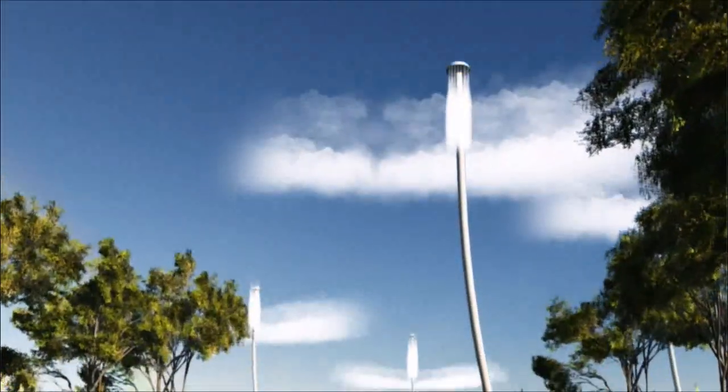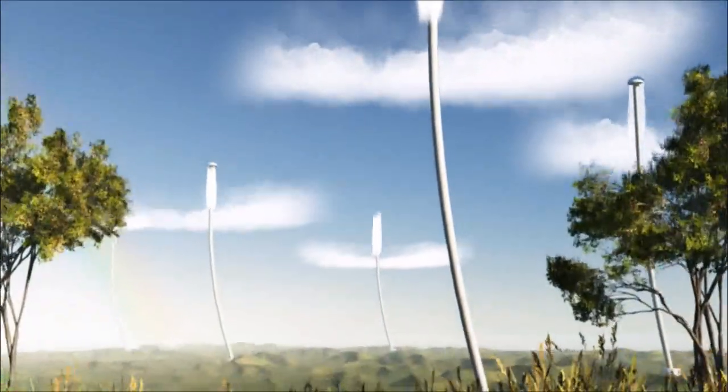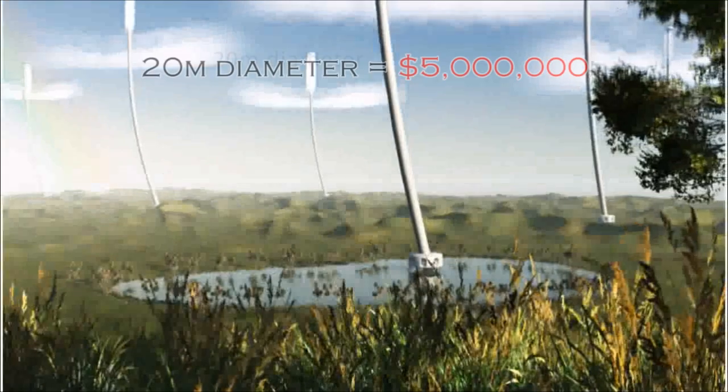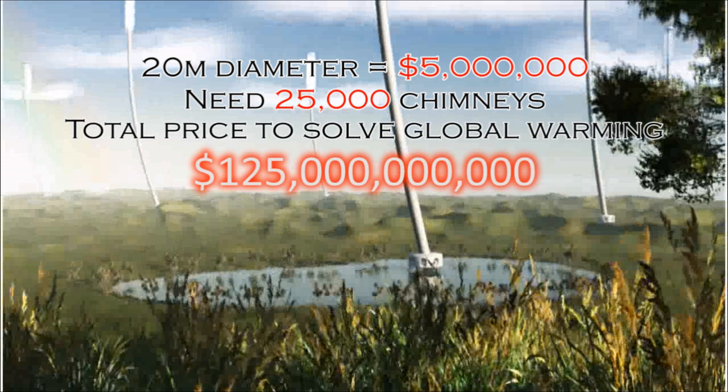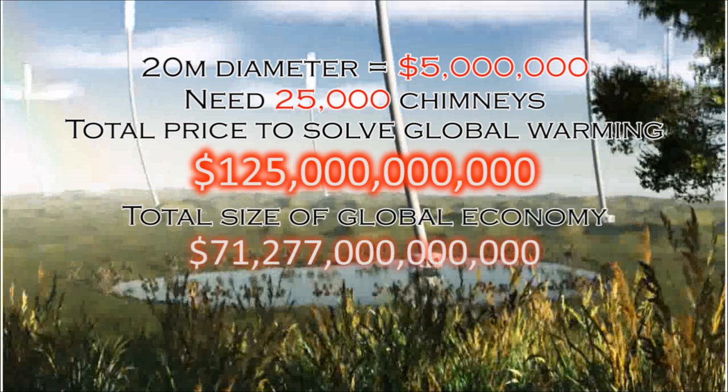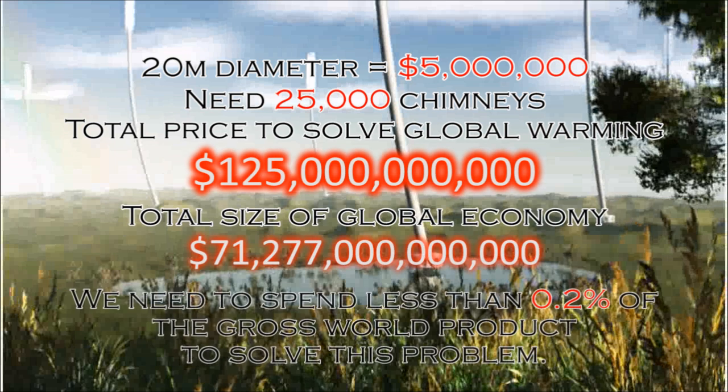Calculations show that building one 20 meter in diameter chimney can cost up to 5 million dollars. 25,000 chimneys of this size are enough to stop global warming. The investment would cost less than 125 billion dollars. Furthermore, as we get more experience with building super chimneys, we can make them more effective by constructing them to be taller and wider. As a result, the production cost of the chimneys will decrease.